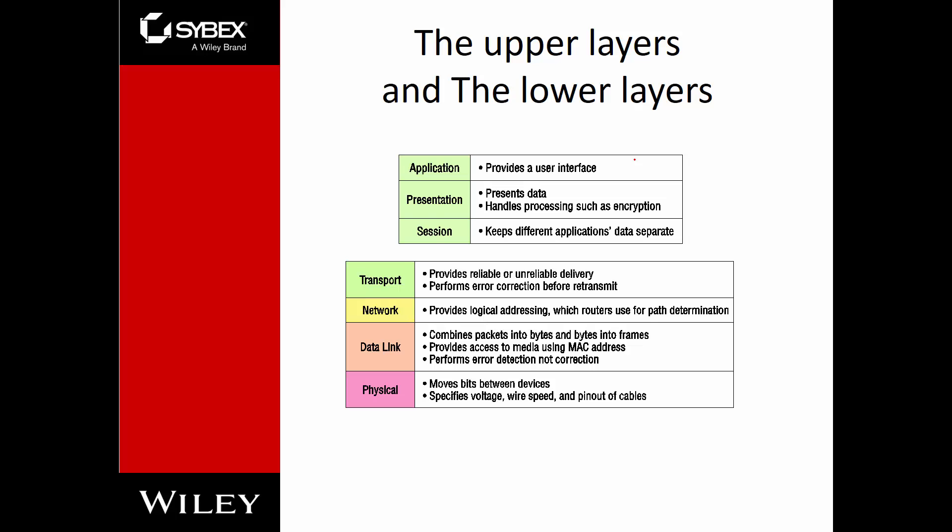At the Application layer, this provides a user interface. At the Presentation layer, we're presenting data as well as handling processes such as encryption. Session might keep different applications' data separate. At the Transport layer, we're looking at reliable delivery and error correction. At the Network layer, we're talking about logical addressing and path determination. At the Data Link layer, we're looking at turning bytes into frames, media access, and error detection — not error correction, just error detection. And lastly, Physical: that's taking the frames, putting them into bits, and actually putting the voltage or wireless signal on the wire to be sent.